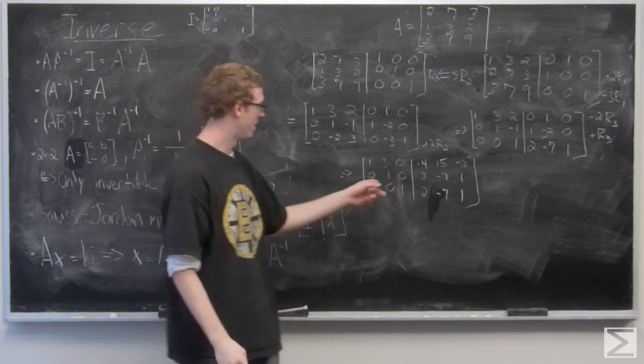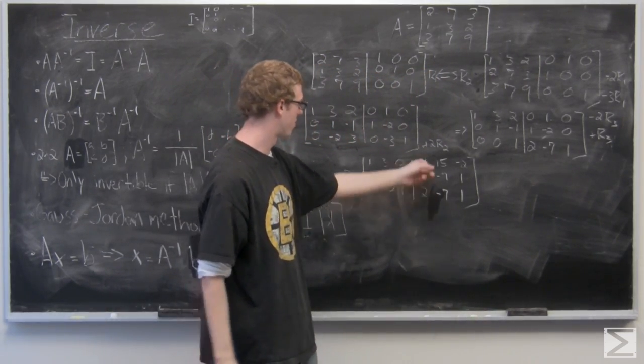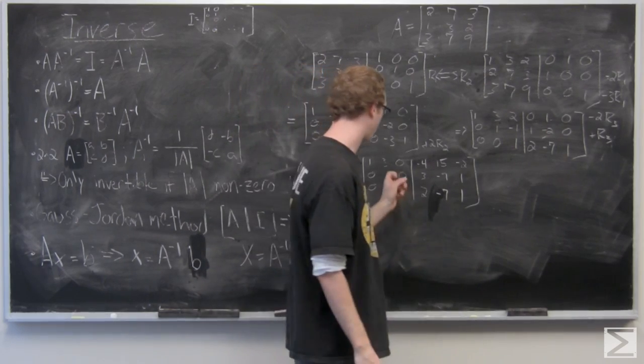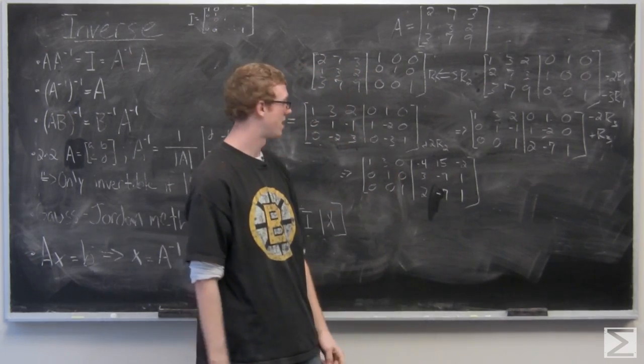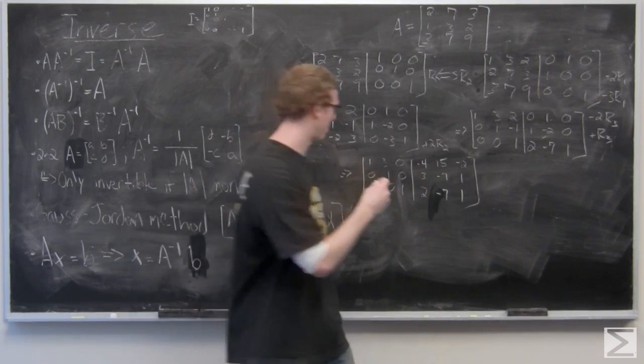Last, all we need to do is subtract 3 of R2 from R1 to get the left side to be the identity matrix, and the right side is going to be our resultant inverse.